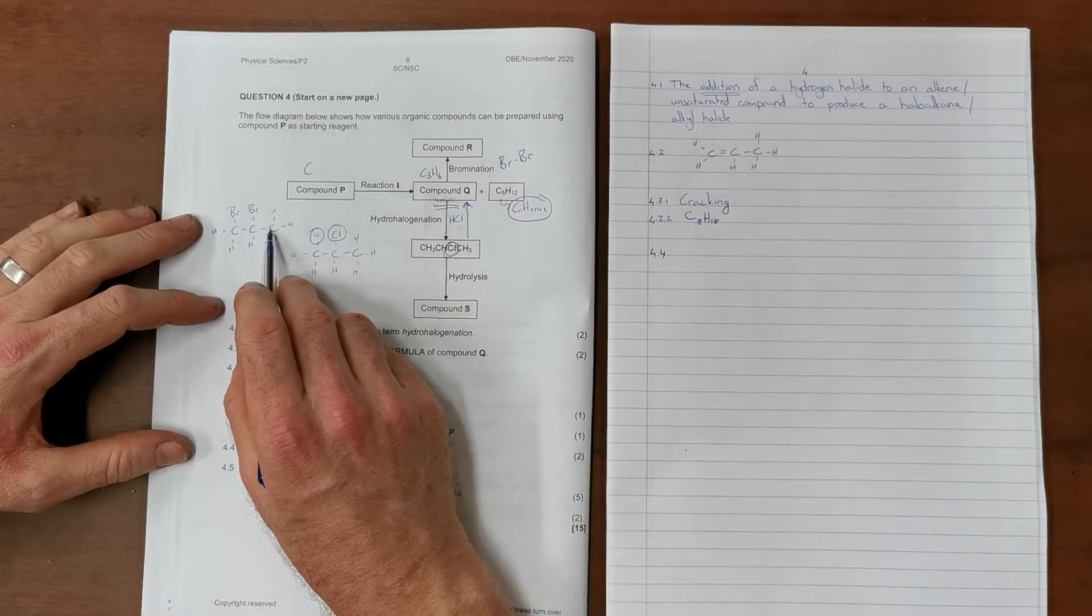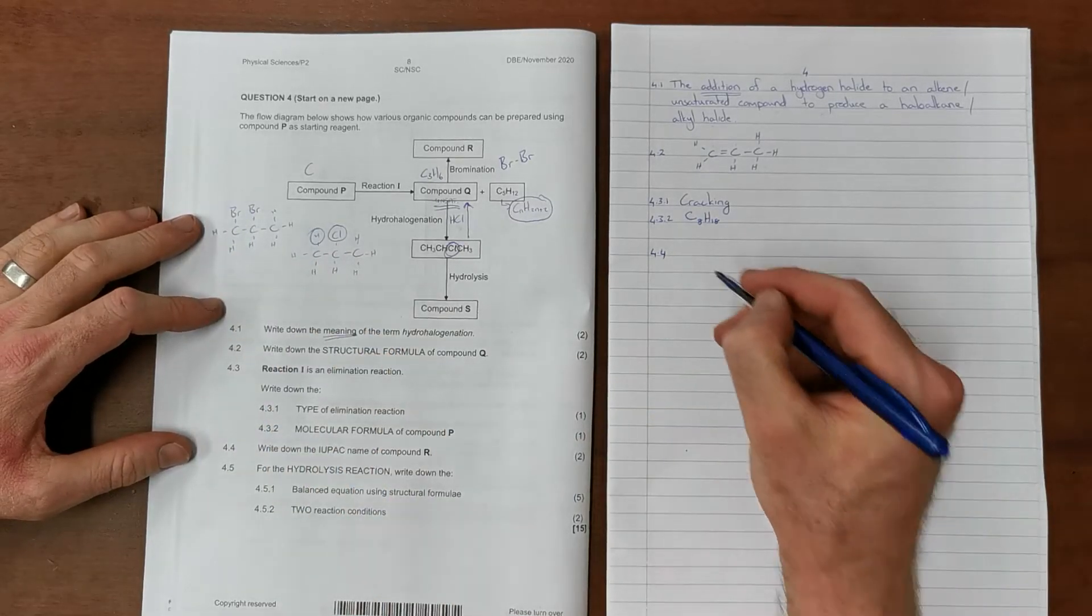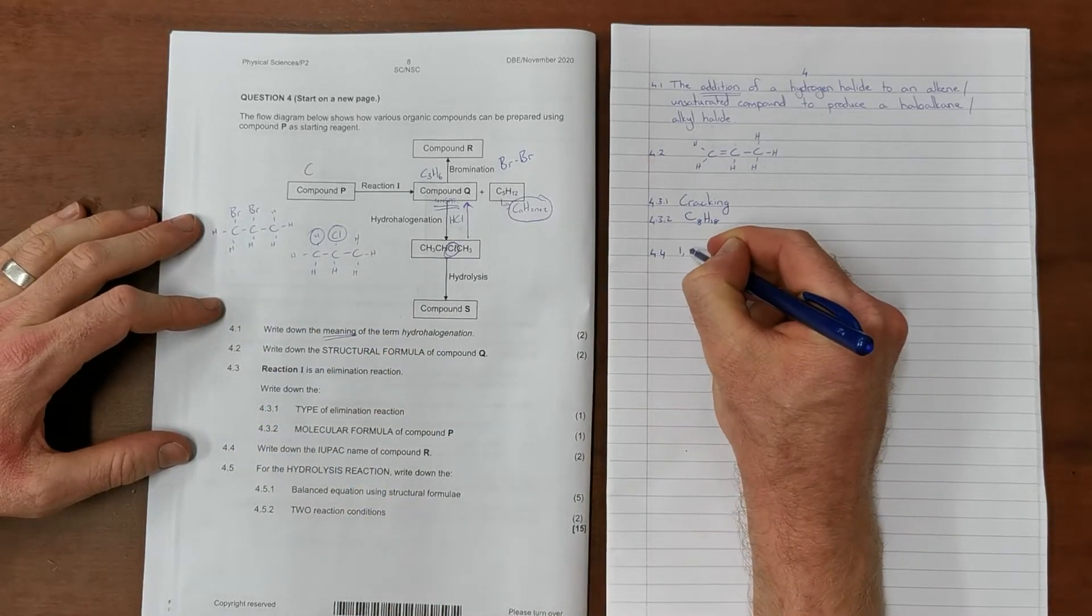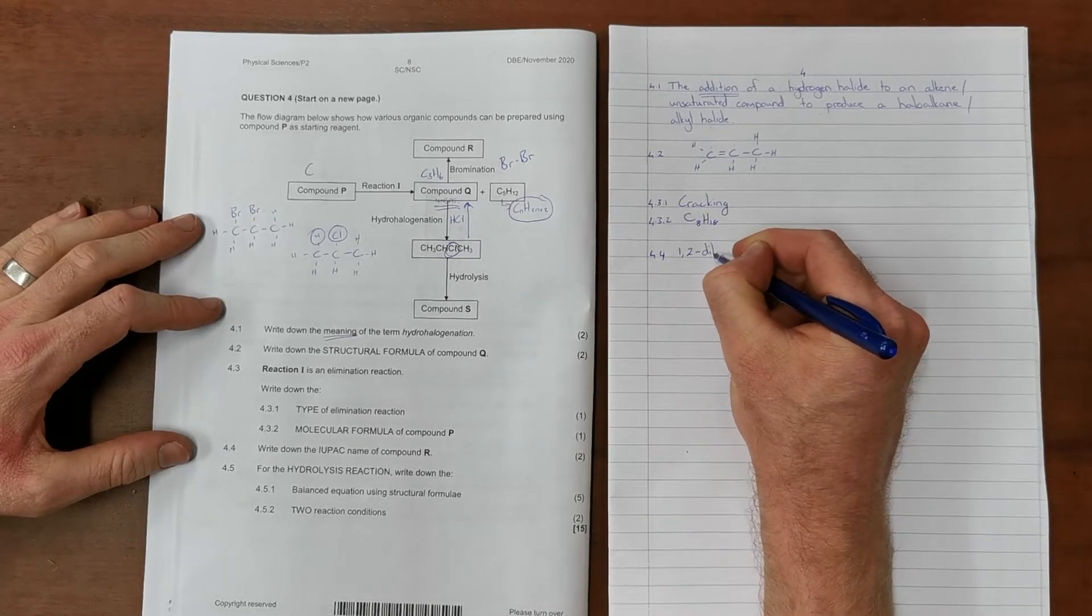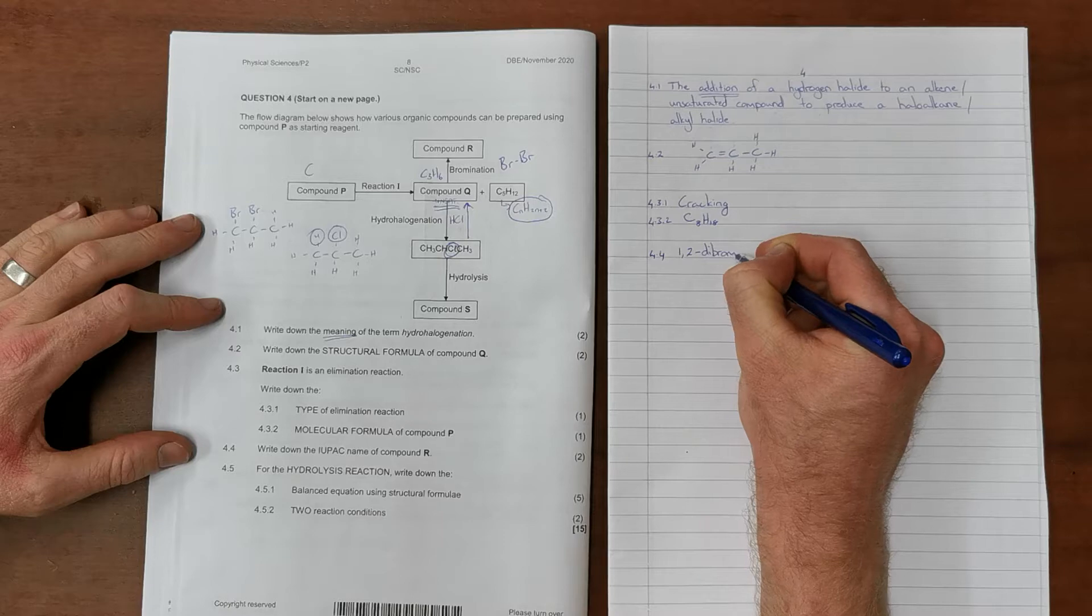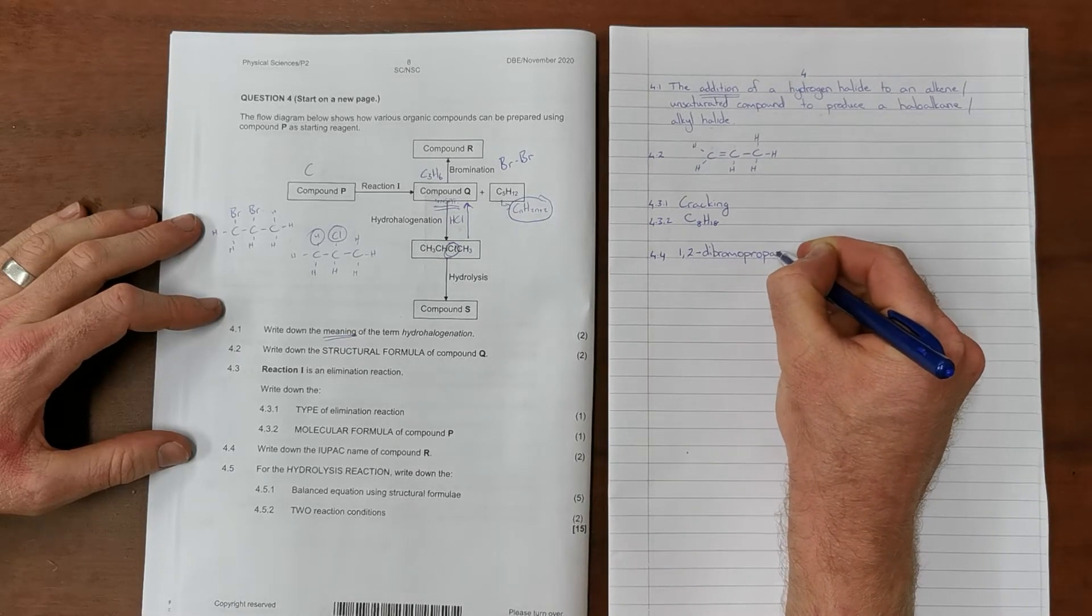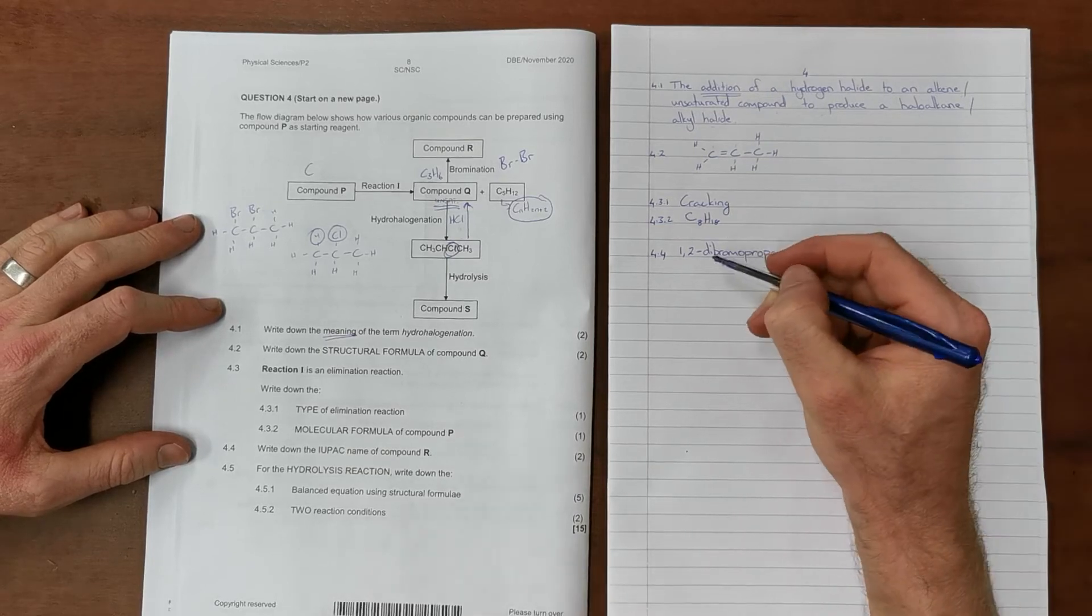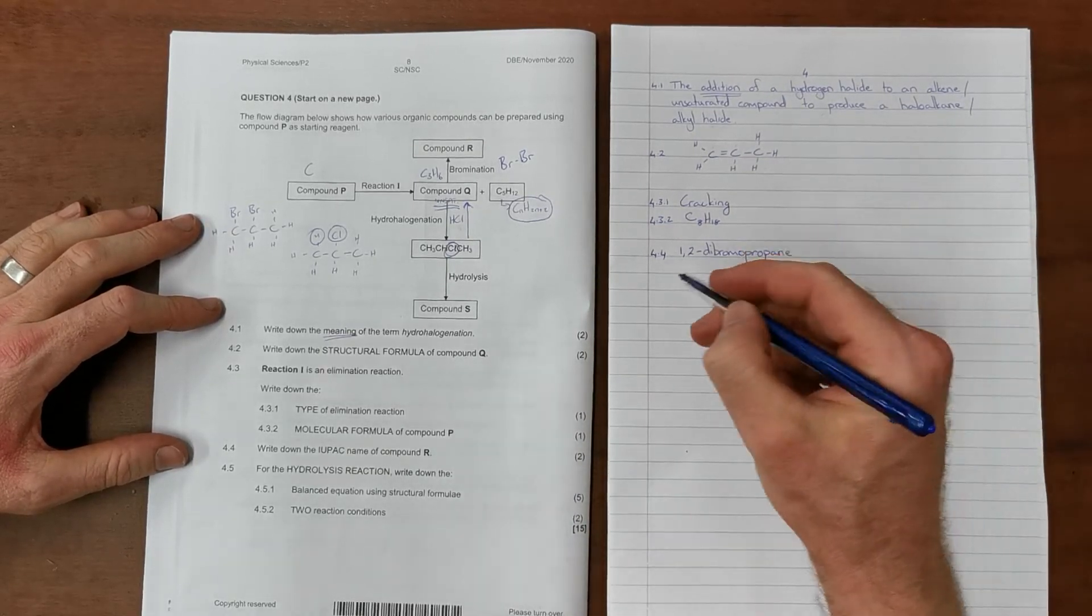This becomes easy to name because we can see this is meth-eth-prop, single bond so therefore propane, there are two bromines so dibromo, and those are in the first and second carbons. So question 4.4 is 1,2-dibromopropane. Keep in mind when naming these compounds there must not be any spaces, this is one molecule and therefore one word.